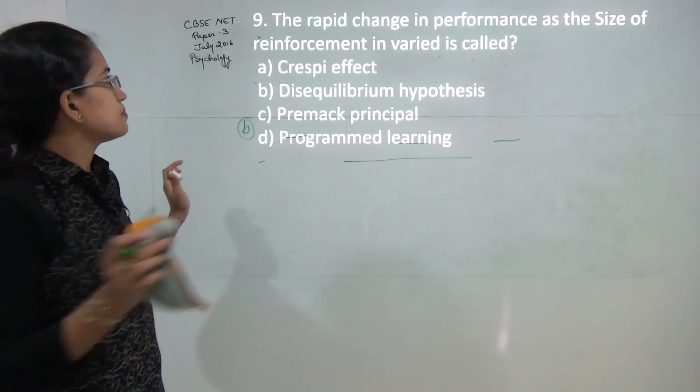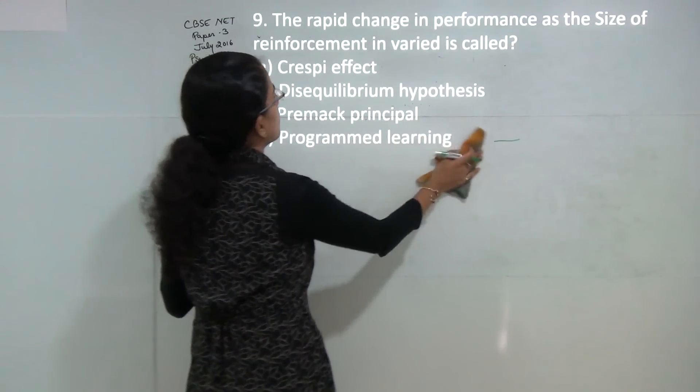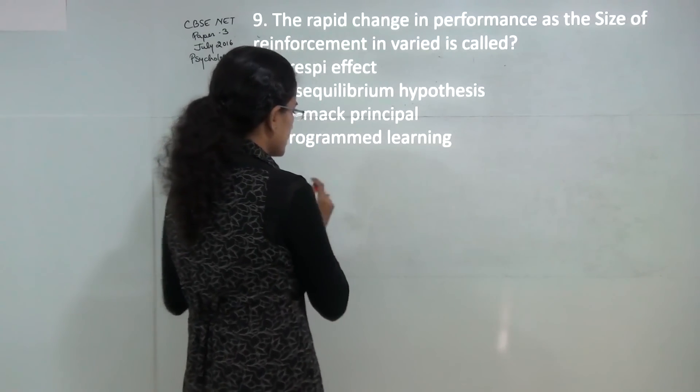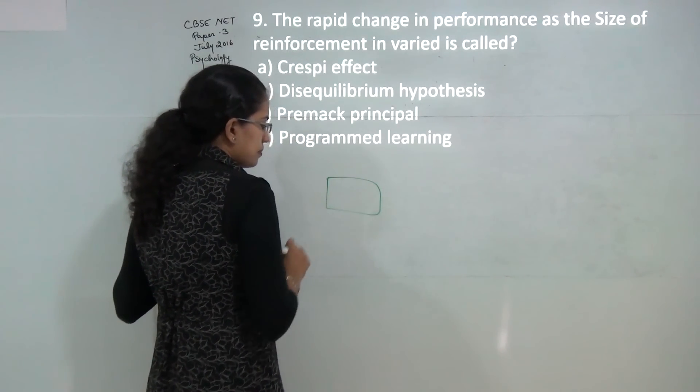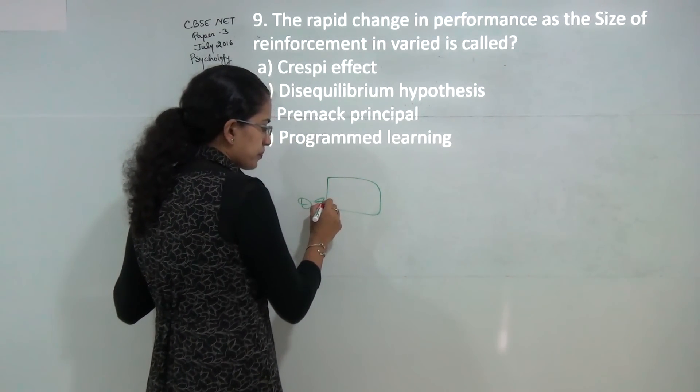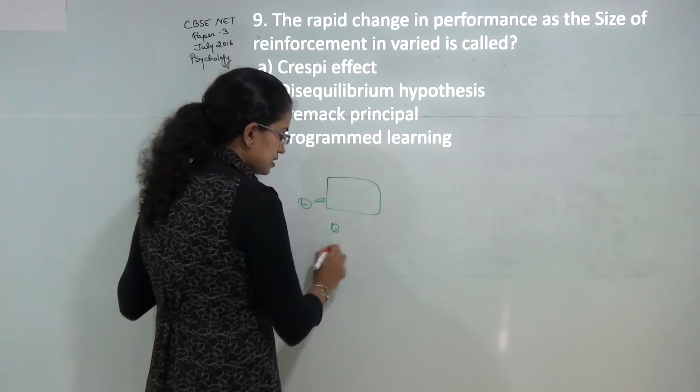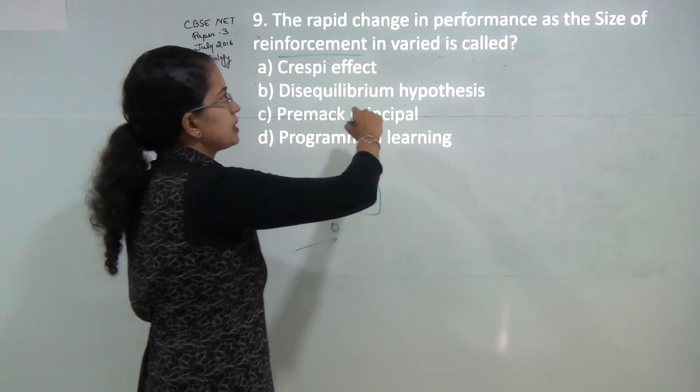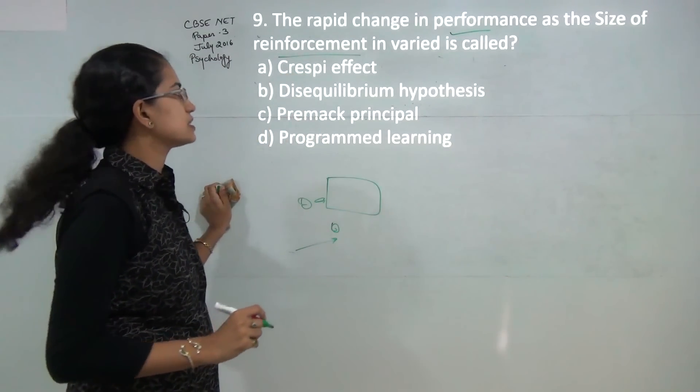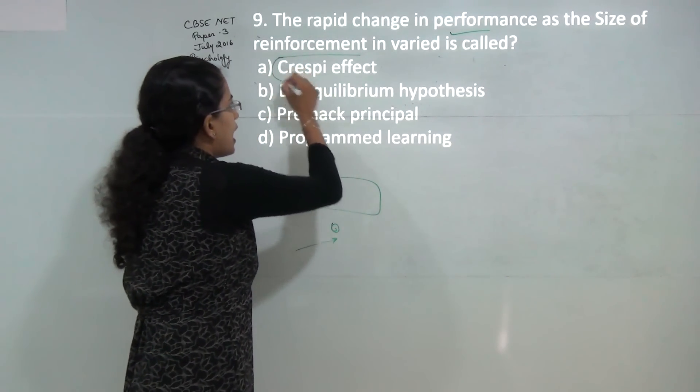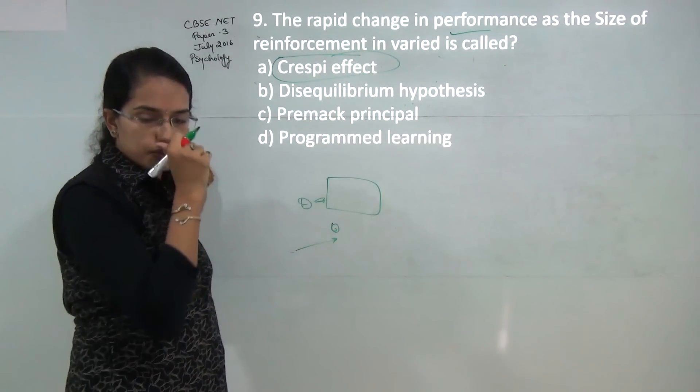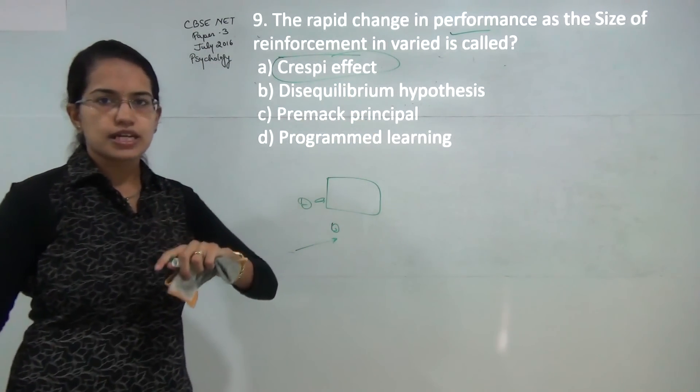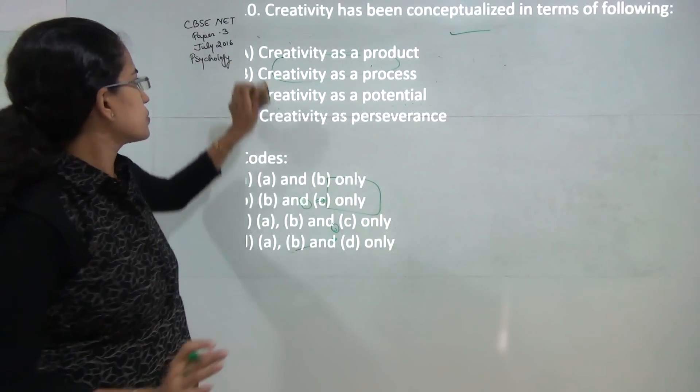Next: Crespi effect talks about rapid changes in performance as the size of the reinforcement is varied. Crespi effect explains that in a maze where a rat has to find food, if the amount of food increases, the speed for the rat to find the food increases. As you are changing the size of the reinforcement, there is a significant change in the performance level. Most important thing here is that this can be applicable only to concepts that have been previously learned and not to a new concept.